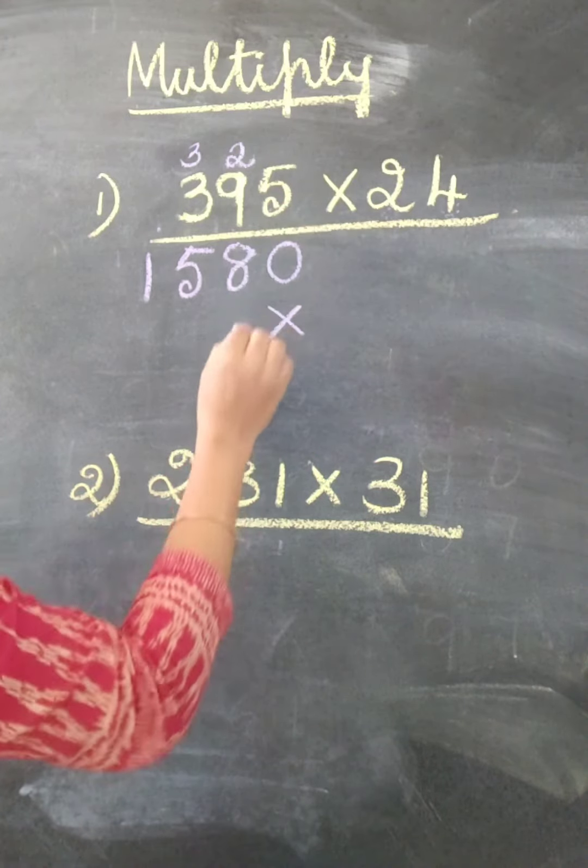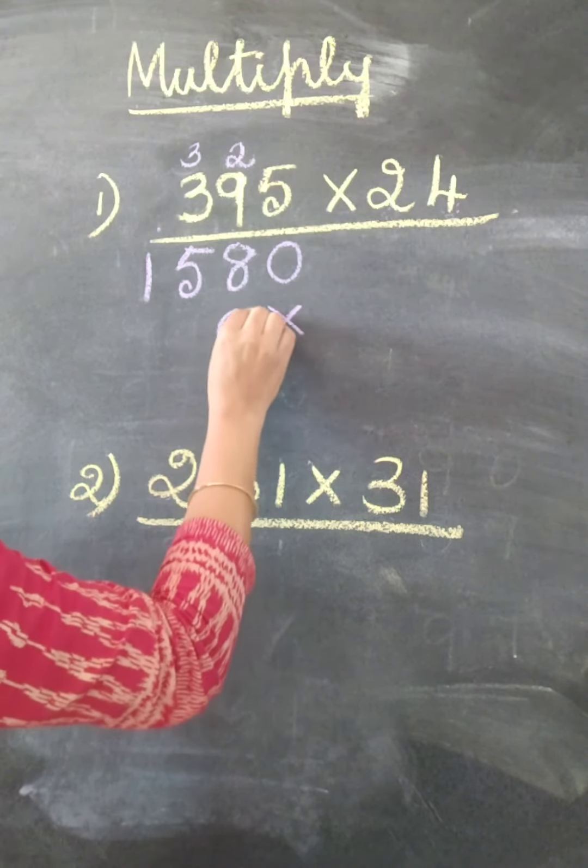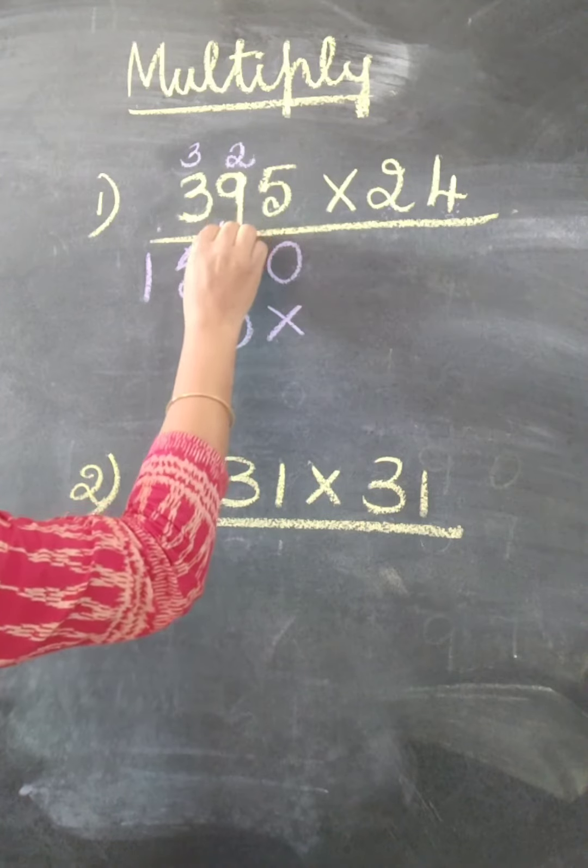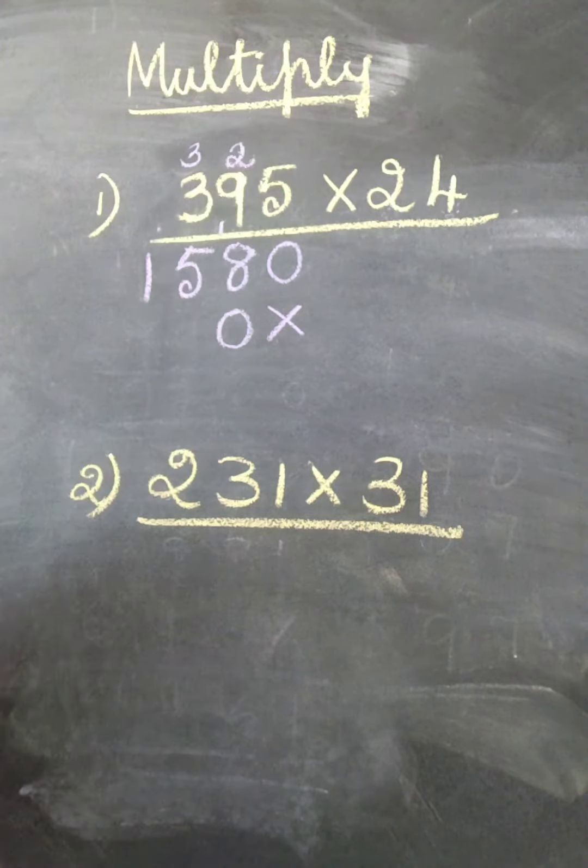2 times 5 is 10. Write 0, 1 you may write here. Because we already have written the numbers, so you may get confused.